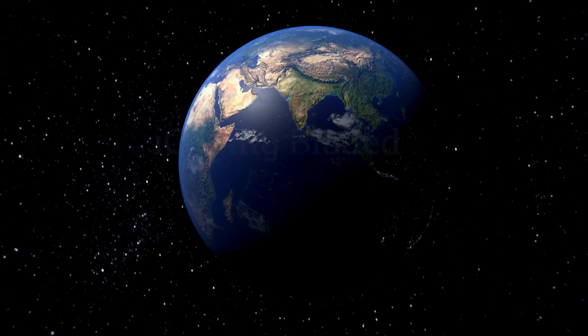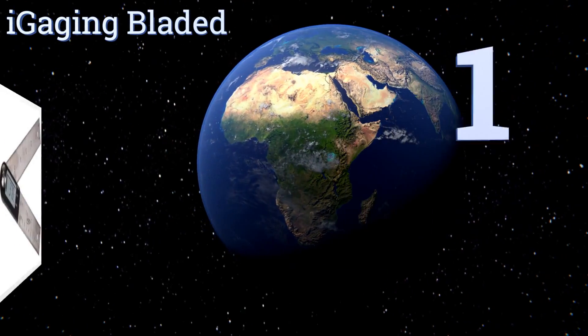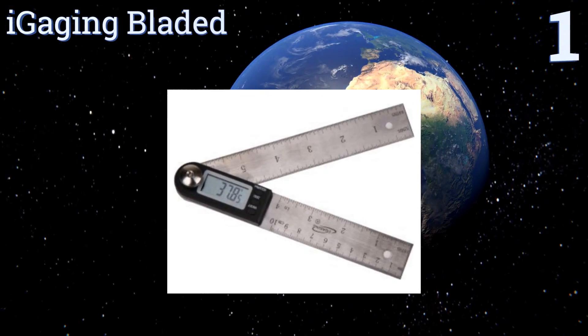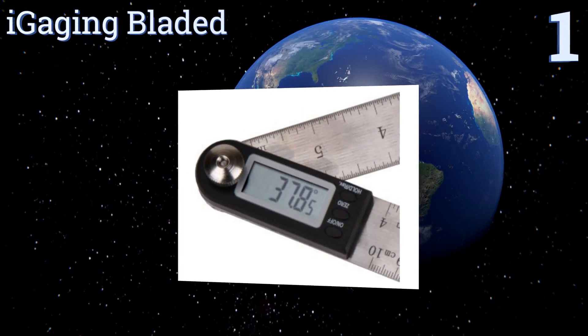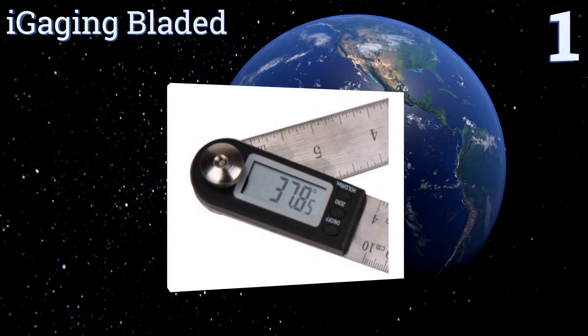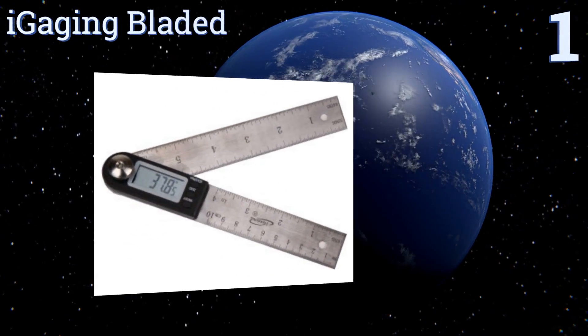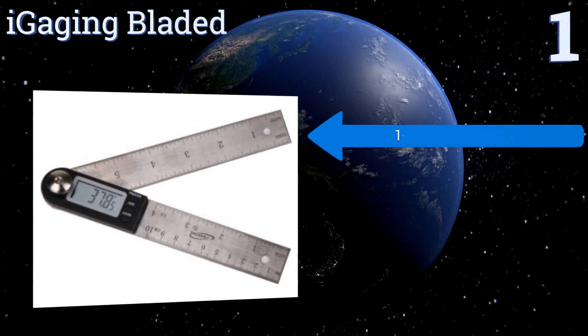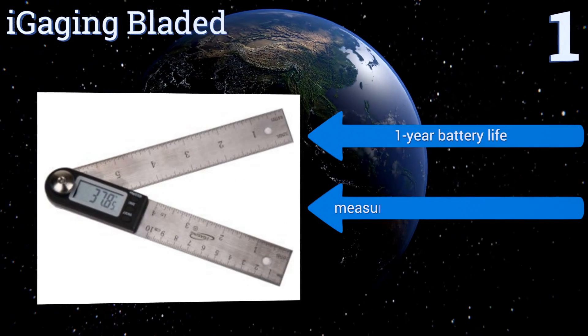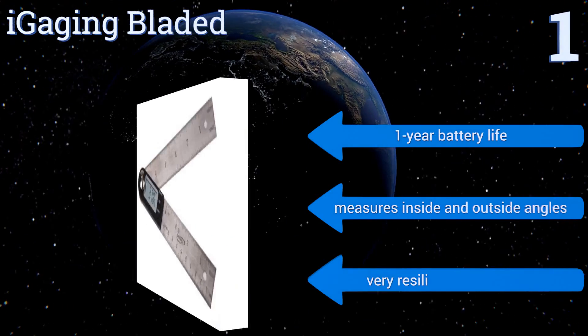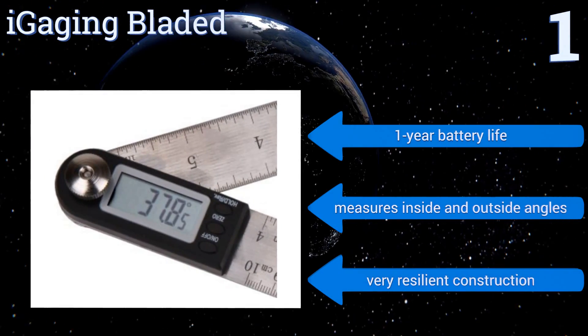And coming in at number one on our list, the iGaging Bladed. It features seven-inch and four-inch stainless steel blades that lock into place for maximum accuracy. The display reads continuously even as the arms are adjusted, which is a useful function for most at-home handyman projects. It boasts a one-year battery life and a very resilient construction. It measures inside and outside angles.